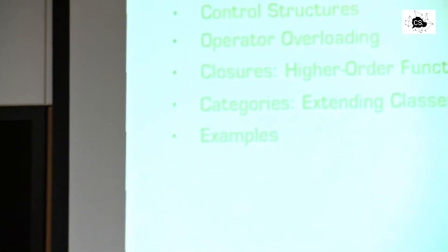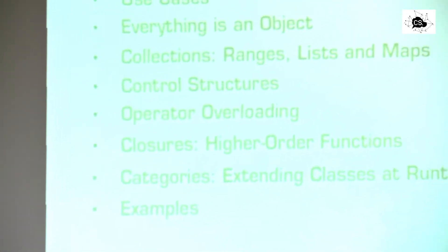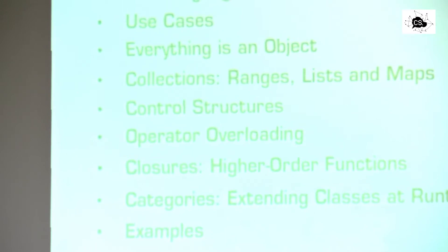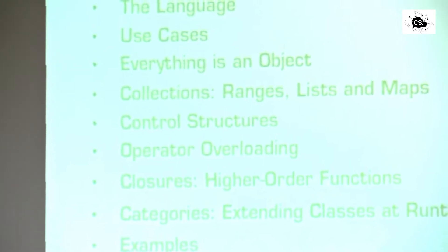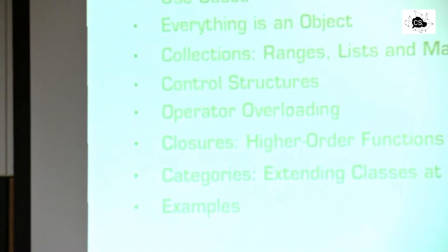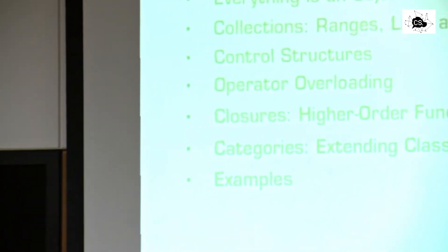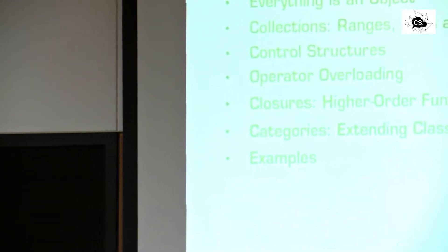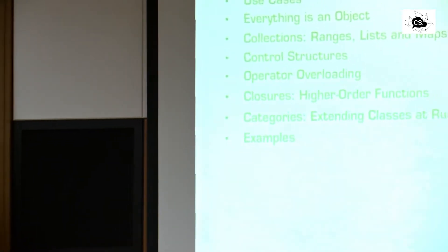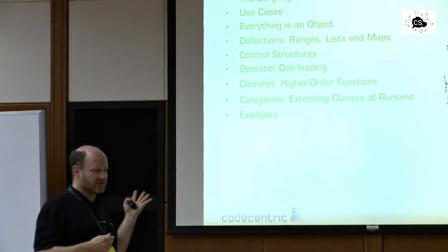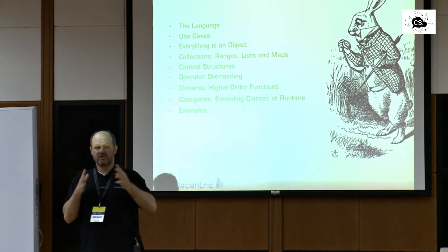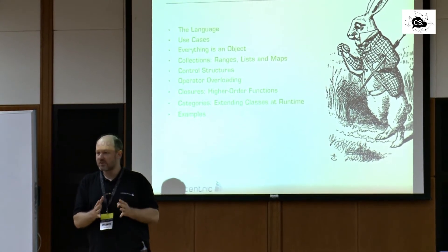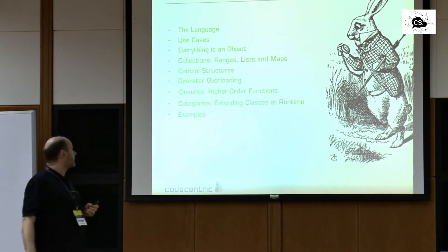Categories: a dynamic language offers you a lot of functionality to change the methods, attributes, whatever you have in your objects at runtime. Categories are one way to do this — to change, for instance, a method of an object for a time being. Maybe later it has its original functionality back. So you can modify on the fly for some short period of time in your code and then get back to the original way to do things.